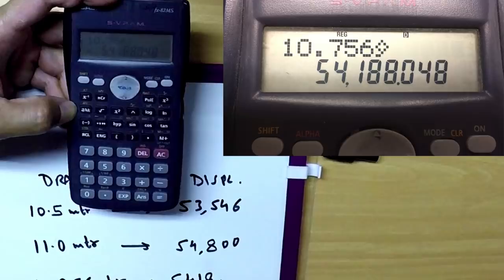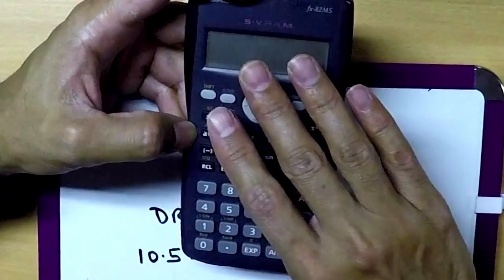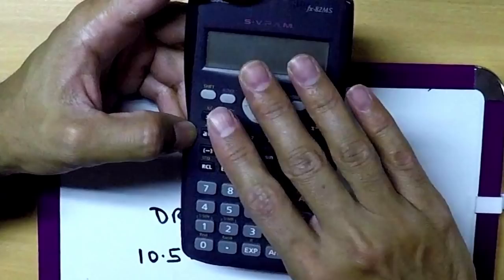Once you have got the result, do not forget to reset this calculator before using it for your second interpolation. The procedure is the same as what I told you at the beginning. You have to press shift, clear, 3, reset all, and that's it. Now your calculator is ready for the next interpolation.